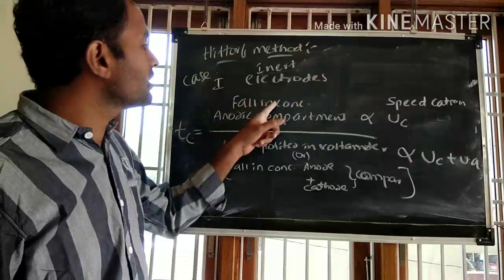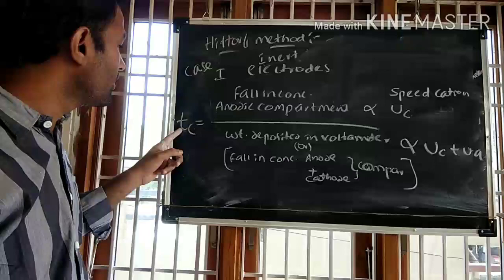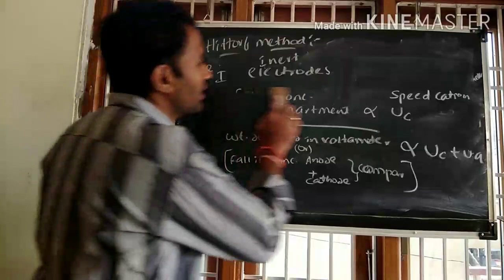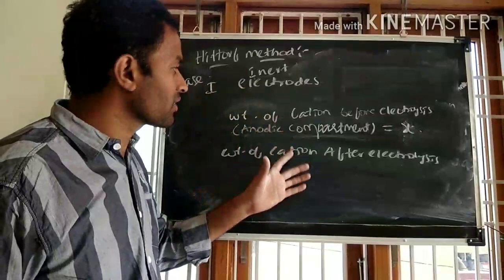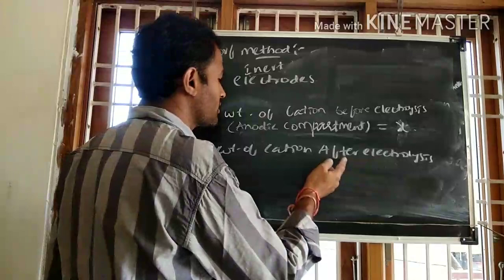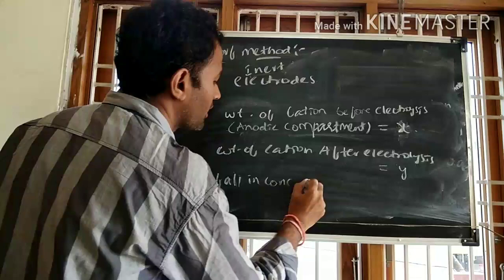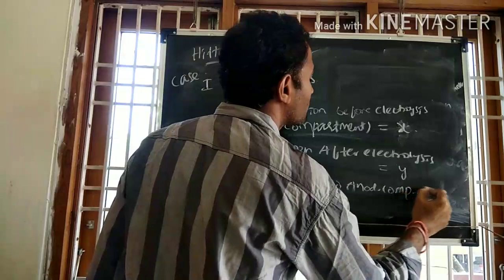By calculating the fall in concentration around the anodic compartment and the weight deposited in the voltmeter using the Hittorf device, and substituting them into the equation, we get the transport number of the cation. The fall in concentration around the anodic compartment equals x minus y, where x is the weight of the cation before electrolysis and y is the weight after electrolysis.